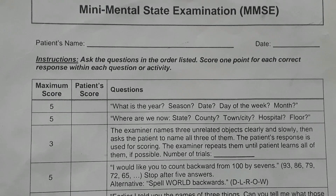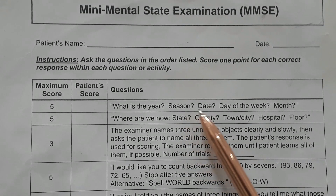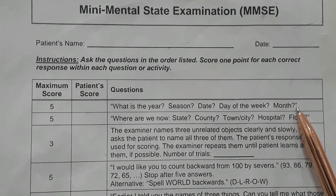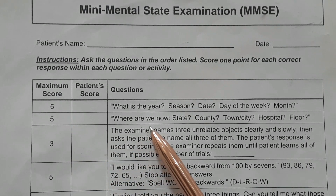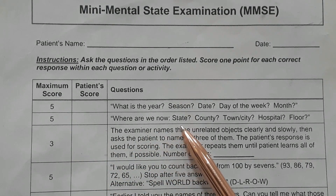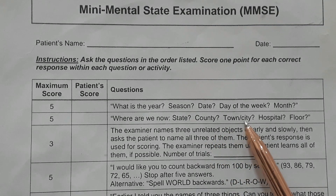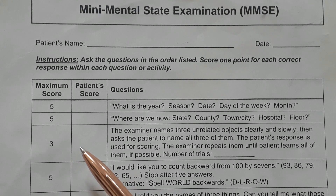For the MMSE, orientation questions score 5 points each. First set: ask the patient what is the year, the season, the date, the day of the week, and the month. Second set: ask where the patient is now — which state, which country, which town or city, which hospital, and on which floor.